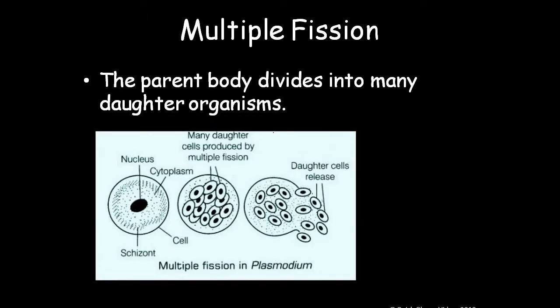Multiple fission: the parent body divides into many daughter organisms — not just one or two, but many daughter organisms from a single parent body. The example is Plasmodium. It creates many daughter cells inside. This normally happens during unfavorable conditions, and during favorable conditions these daughter cells are released, each developing into an individual organism.